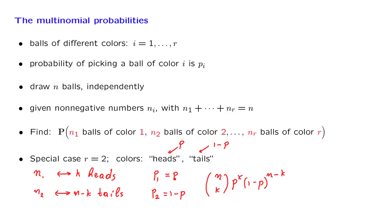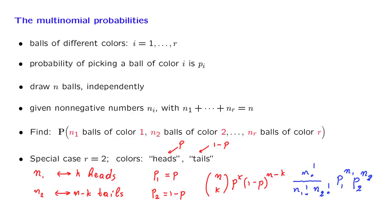We can translate this answer to the multinomial case where we're dealing with colors, using the following substitutions. n-choose-k is n-factorial divided by k-factorial times (n-k)-factorial. Here k corresponds to n1 and n-k corresponds to n2, so we get n-factorial over n1-factorial times n2-factorial. Then p corresponds to p1 and (1-p) corresponds to p2, giving us p1^(n1) times p2^(n2). This is the form of the multinomial probabilities for the special case of two colors.